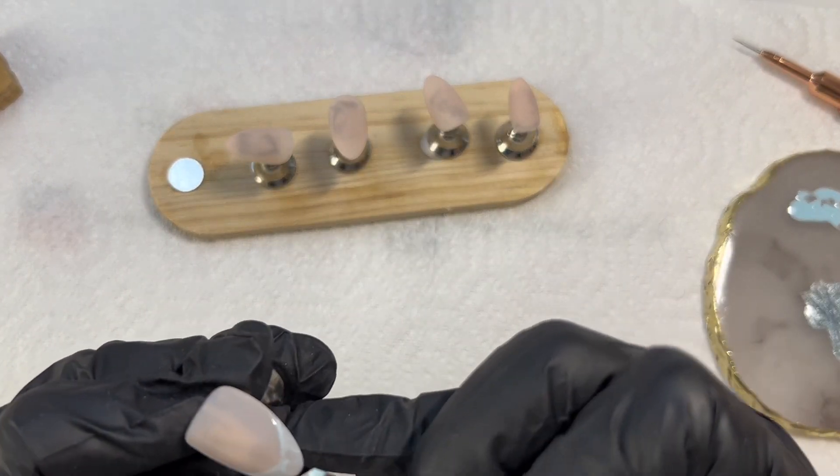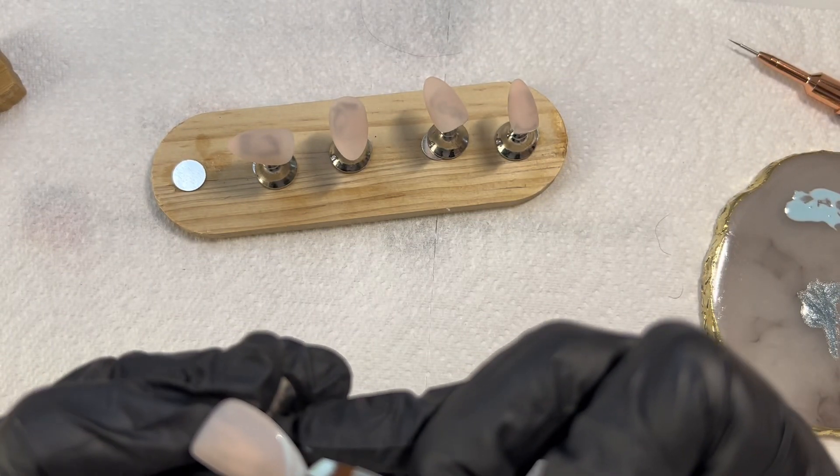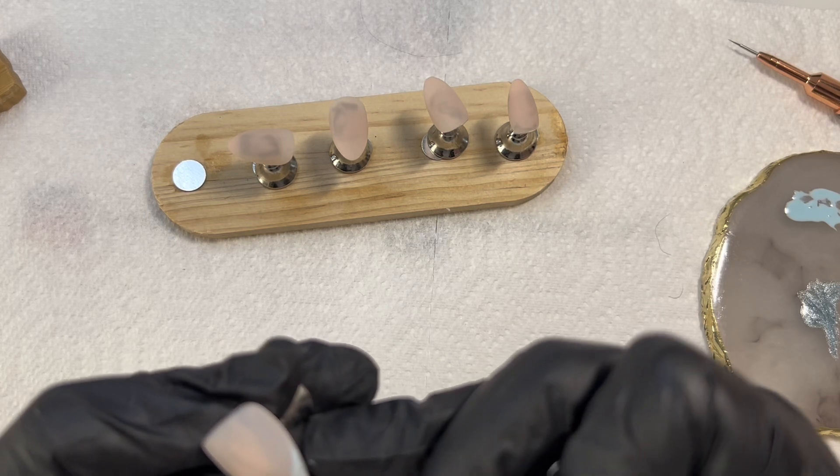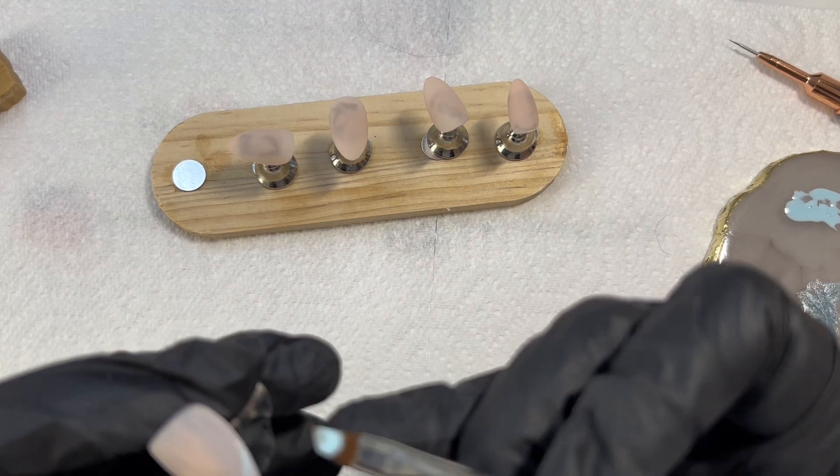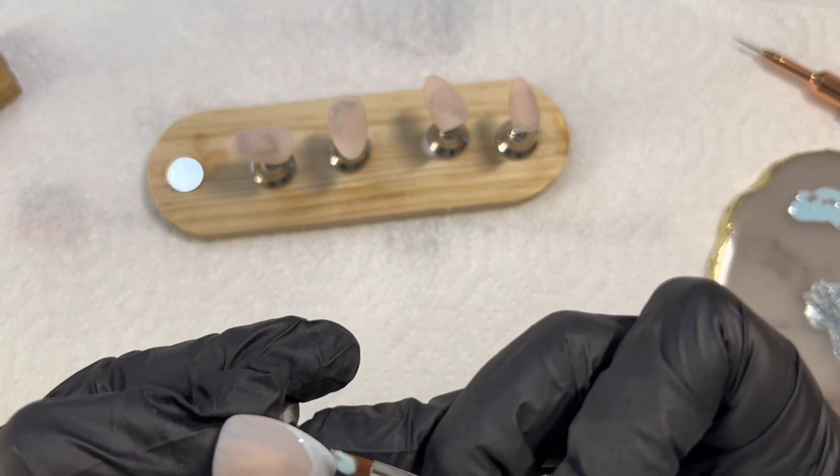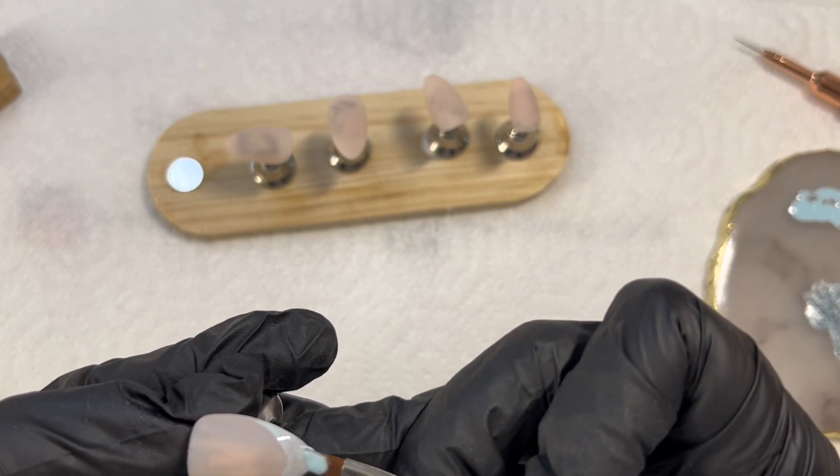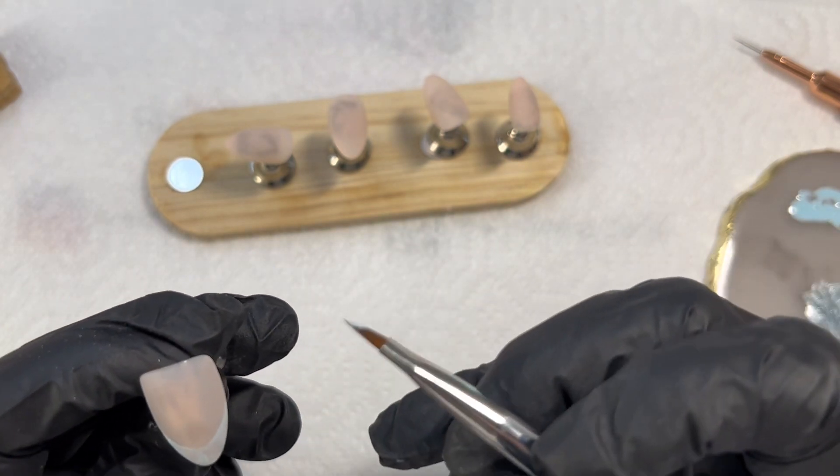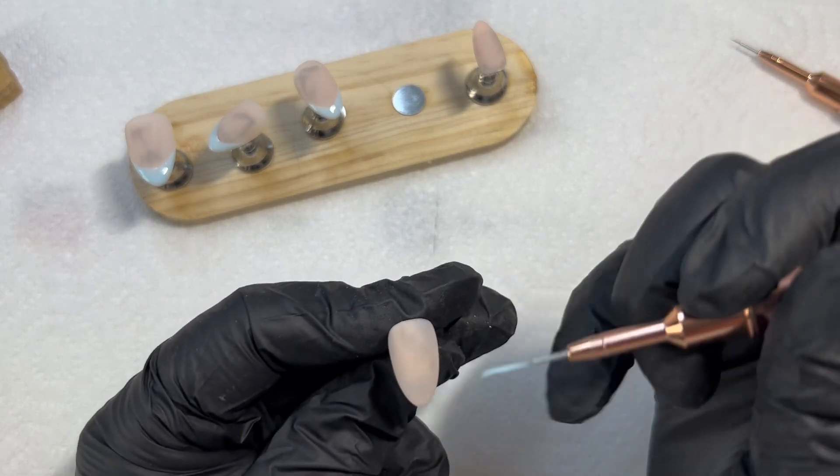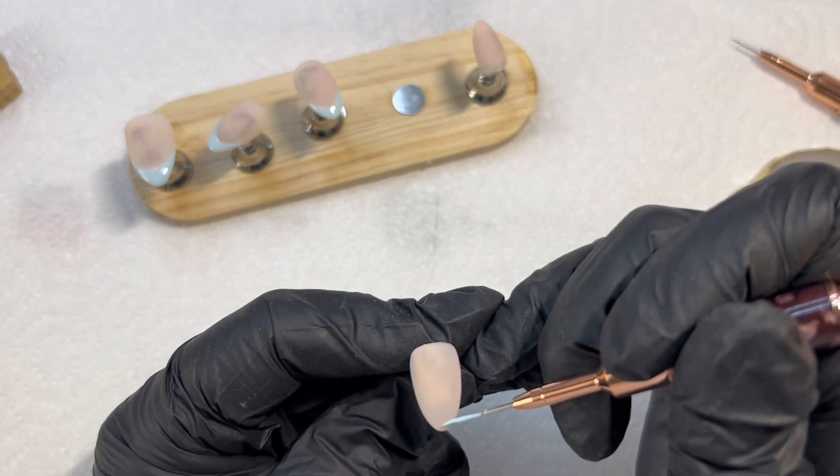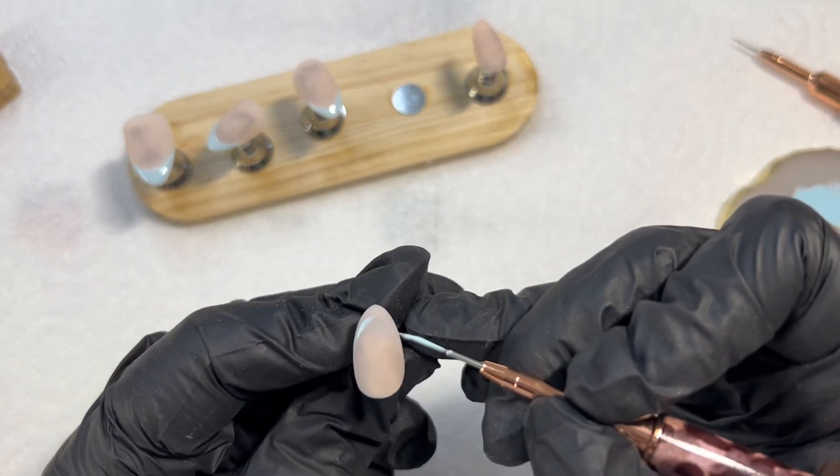Just to make sure that that cat eye gel polish really pops, it just gives it a bit of a darker color to set on top. I'm just going to repeat this process for all the nails. Once one set of nails is done, I'll cure those while working on the set for my other hand. I'll just let you watch and I will speed through it a bit and I'll see you at the next step.